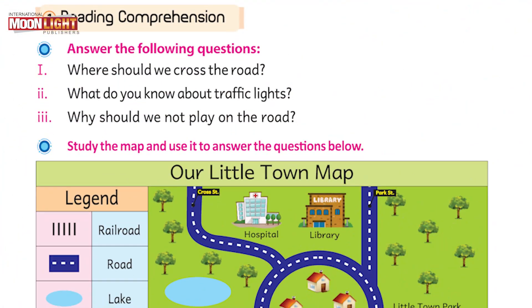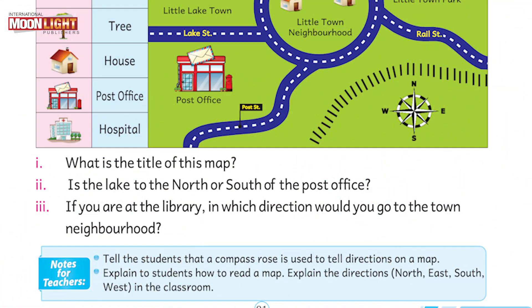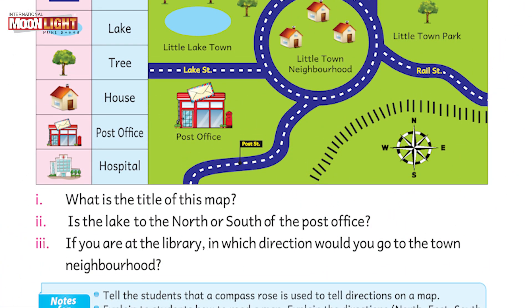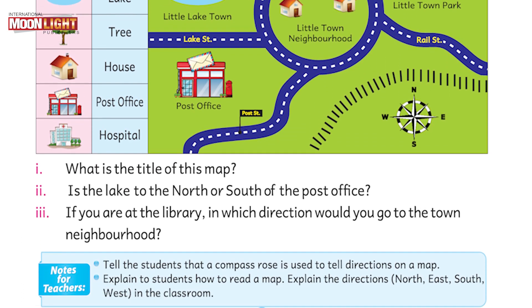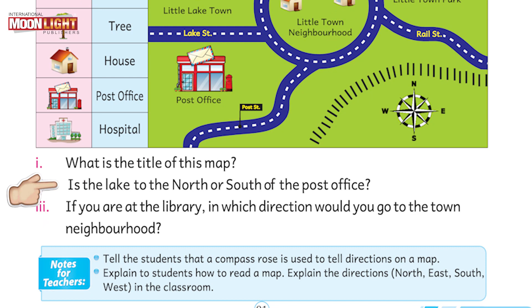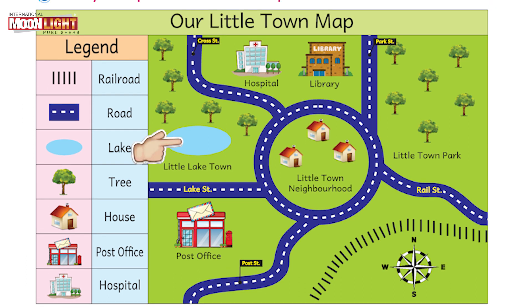Now it's time to move towards our next question. We have been shown a map — this is about a little town map. The legend is at the corner. We have to focus on the map and give the answers being asked. What is the title of the map? Just look at the map, find out the title — the title of the map is "Our Little Town Map." Next question: is the lake to the north or south of the post office? First find out where the post office is, then focus on the lake to see on which side it is situated. The lake is to the north side of the post office.